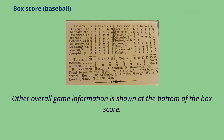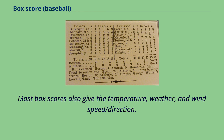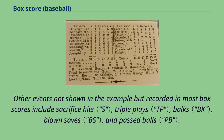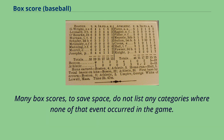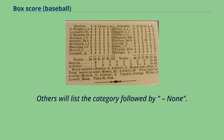Other overall game information is shown at the bottom of the box score. Most box scores also give the temperature, weather, and wind speed/direction. Other events not shown in the example but recorded in most box scores include sacrifice hits, triple plays, blown saves, and passed balls. Many box scores, to save space, do not list any categories where none of that event occurred in the game. Others will list the category followed by 'none.'